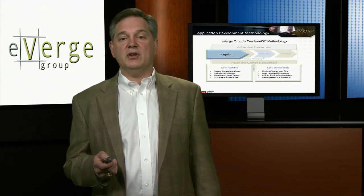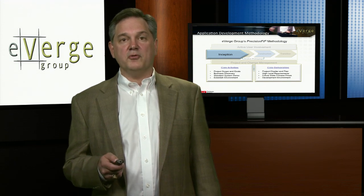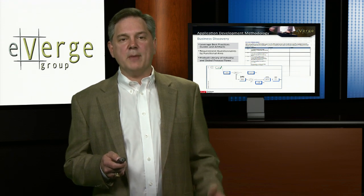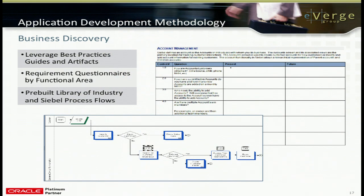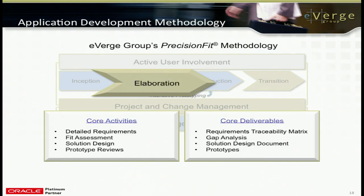Each of those core activities has a matching set of deliverables that are delivered and approved by our clients as a function of the phase. As an example of business discovery, we go into a project with predefined processes in many of our practices — based on the custom off-the-shelf software we deliver — and predefined templates with questions to provoke the requirements we'll eventually capture. The next stage is elaboration, where we do detailed requirements gathering and try to solidify those requirements. We take those requirements and do a fit assessment and gap analysis to compare how they'll be met with our standard delivered software functionality.